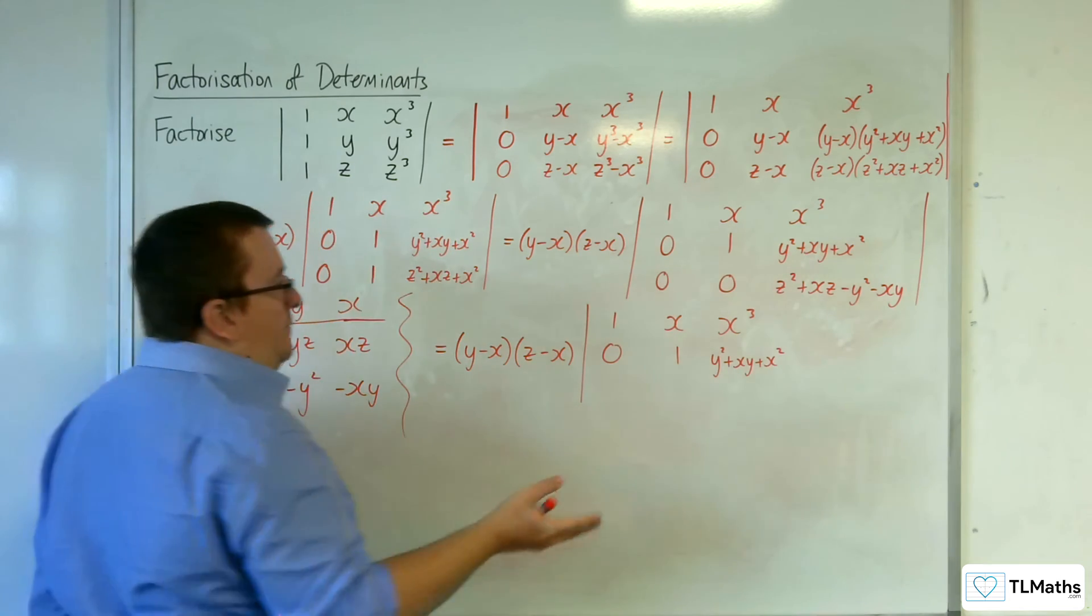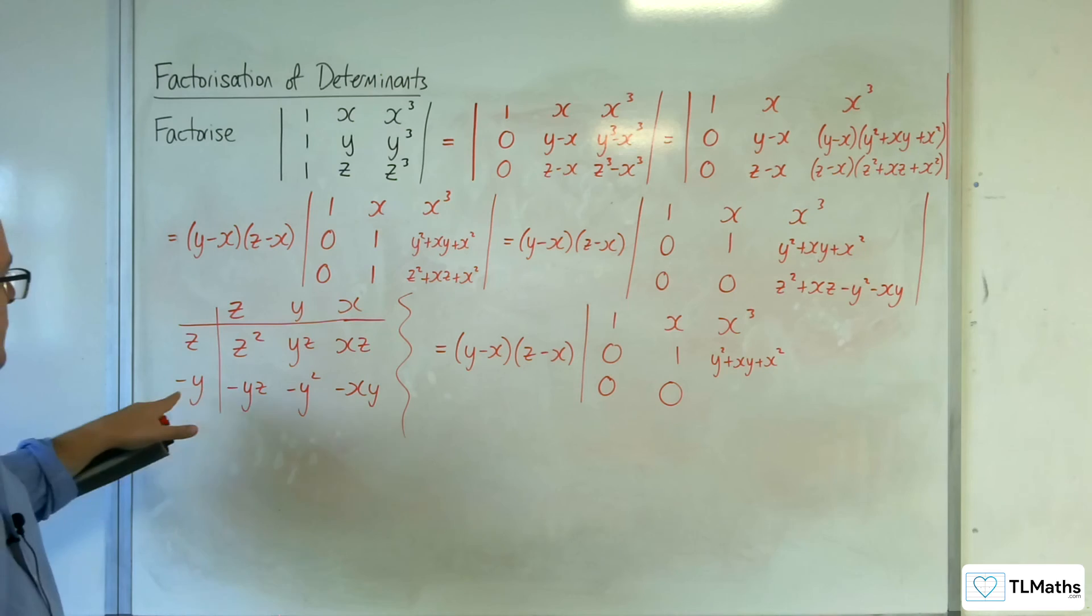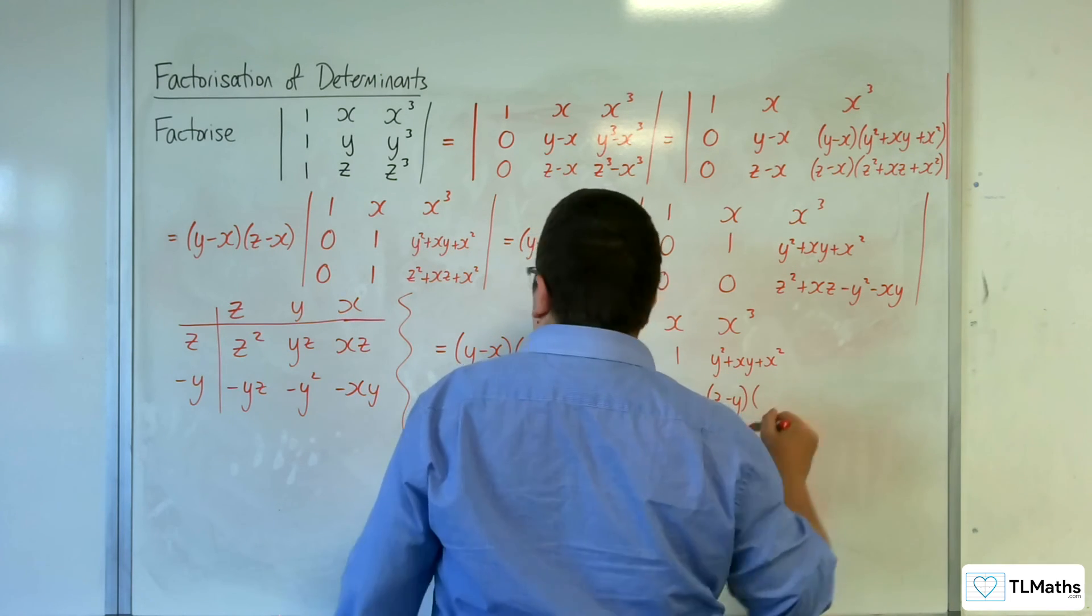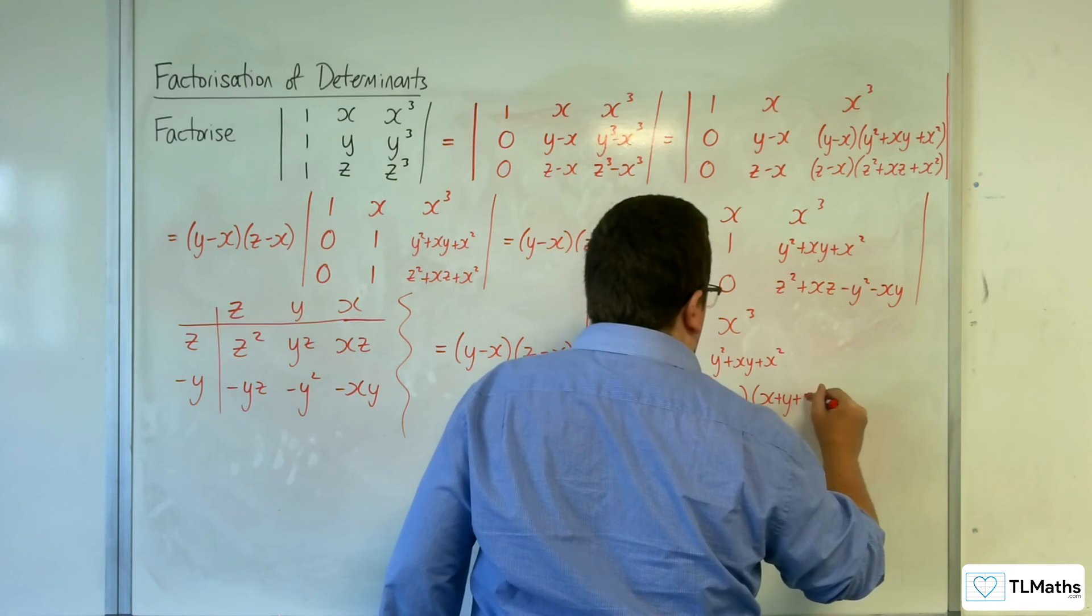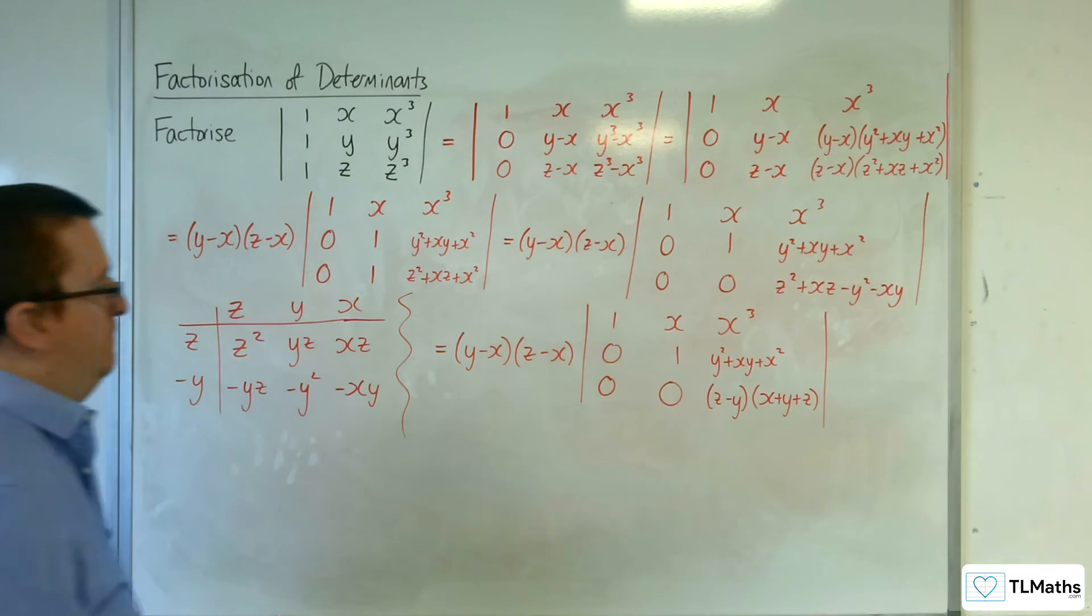And I've got 0, 0. Now, this term, we've got z take away y, and we've got x plus y plus z.